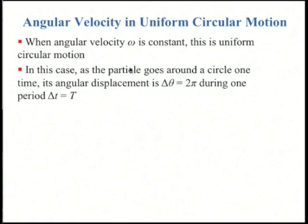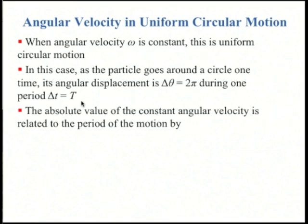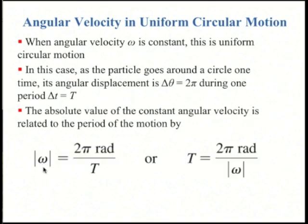When angular velocity omega is constant, that's uniform circular motion. In that case, delta theta equals 2π for one full period T. So omega for uniform circular motion equals 2π divided by T, the period. Equivalently, the period T equals 2π divided by the magnitude of the angular velocity, or angular speed.